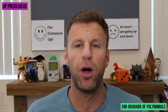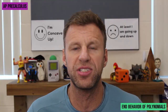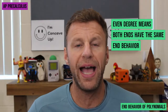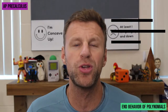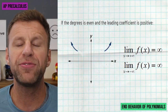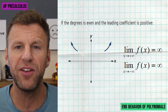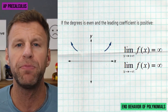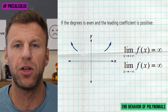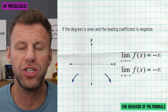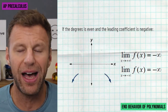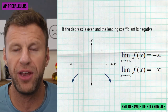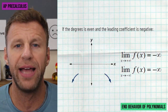If you have an even degree polynomial, both ends are doing the same thing — both ends are going up or both ends are going down. If the leading coefficient of an even degree polynomial is positive, both ends are going up, so the limit to the right and the limit to the left are both positive infinity. If you have a negative leading coefficient with an even degree function, then both ends are going down — the limit to the left and the limit to the right are both negative infinity.